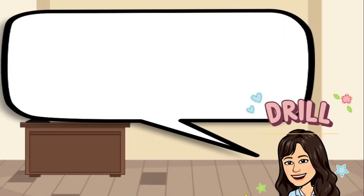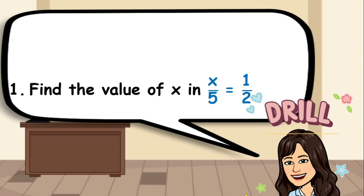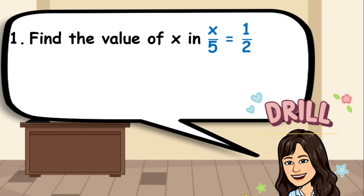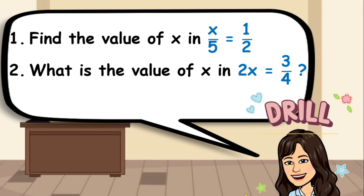For your second drill, solve for the value of the unknown variable to make the equation true. Number 1: find the value of x in x over 5 equals one half. And number 2: what is the value of x in 2x equals three fourths?